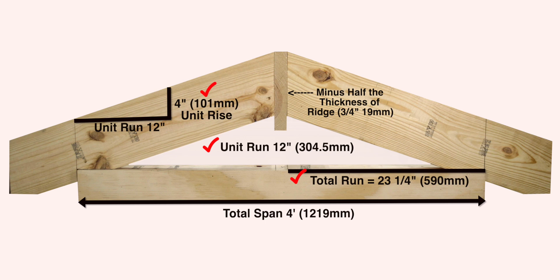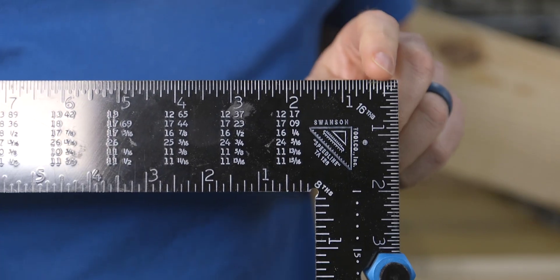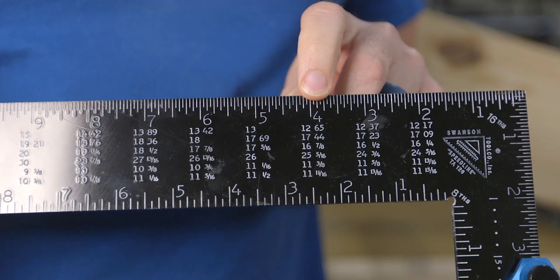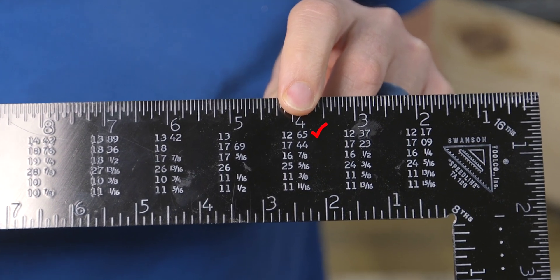Last is the length of common rafter per foot of run, and this one's easy as well. Once you've determined your unit rise, which is four inches for our little roof, simply look on a framing square under four to find the length of common rafter per foot of run, which is 12.65 inches.